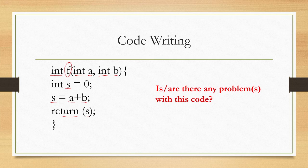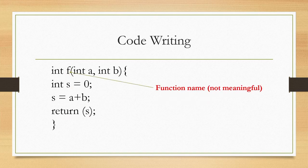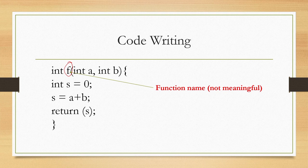Here we have declared the return type of the function as int, given the function the name 'f', and within parentheses provided two integer inputs a and b. Then a variable s is defined inside the function, initialized to 0, assigned the sum of a and b, and returned. This may look like a simple and correct program — but is it following proper code writing practices? One problem is with the name of the function: 'f' does not convey any meaning. Ideally the name should convey the purpose, for example 'sum' or 'sum_of_integers'.